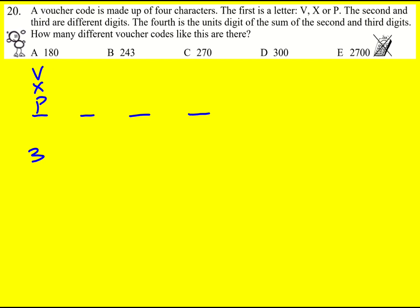So if we're trying to work out how many different voucher codes there are, then there'll be some that start with P and then some numbers, some would start with X and some that start with V.